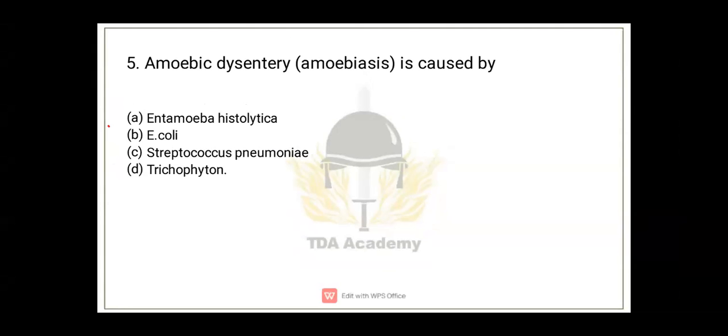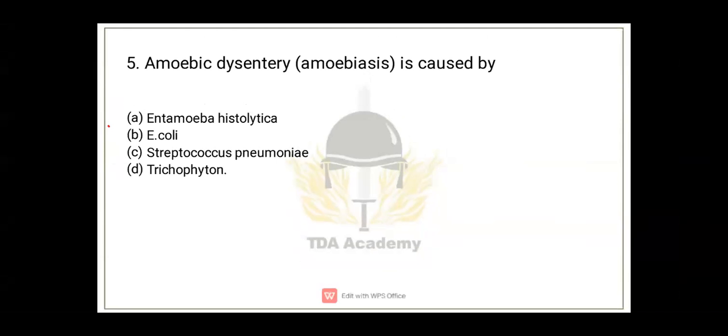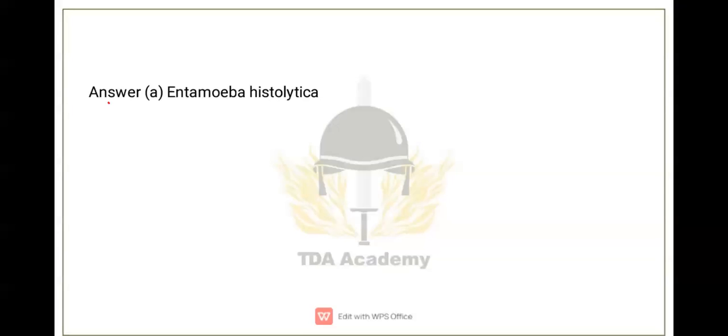Amoebic dysentery or amoebiasis is caused by? You will know the correct answer because we've already covered diseases. Option A: Entamoeba histolytica. B: E. coli. C: Streptococcus pneumoniae. D: Trichophyton. The correct option is Entamoeba histolytica. This causes diarrhea and dehydration in the body. Option A is the correct answer.